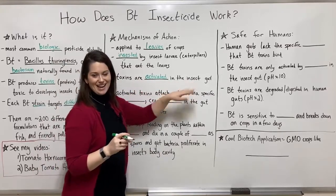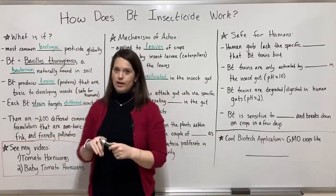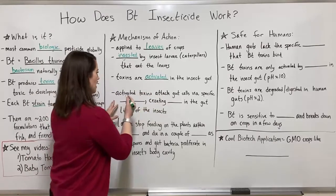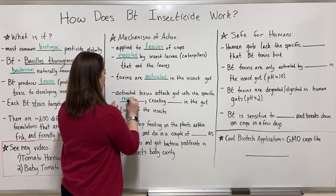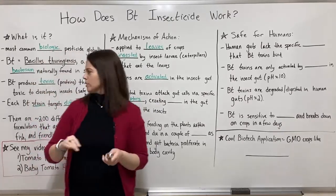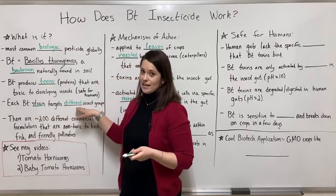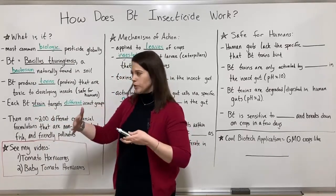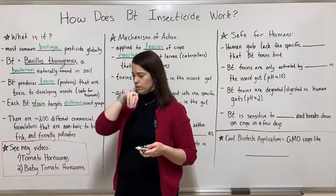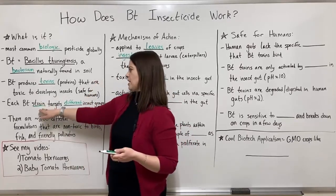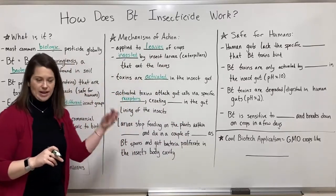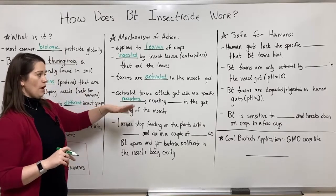Those toxins we talked about are activated in the insect gut — only in the insect gut of the strain it targets, not in the human gut at all. Activated toxins then attack gut cells via specific receptors. Only cells that have those receptors are affected. That's why each strain can target different insect groups — different insect groups have different receptors, and each strain can only bind to a cell if it has that particular receptor.